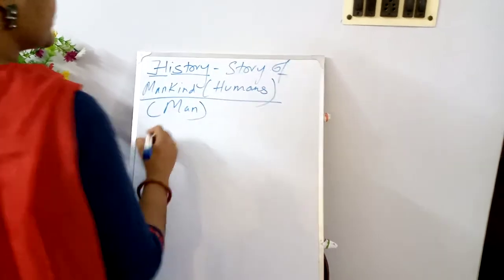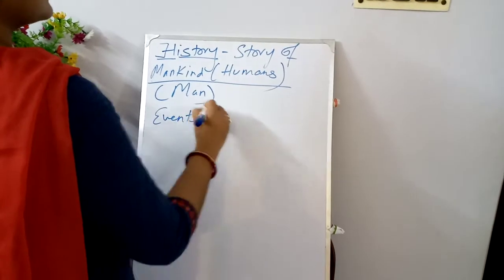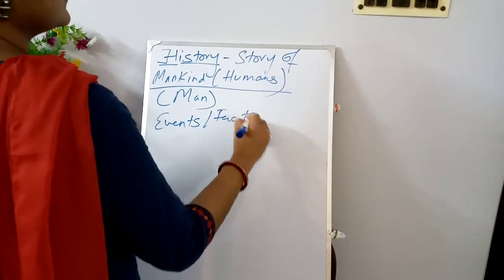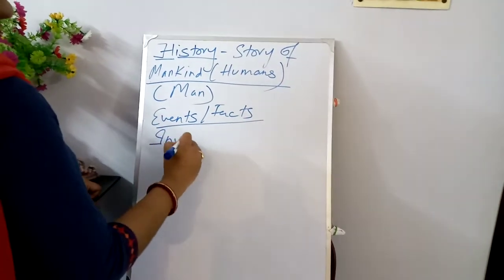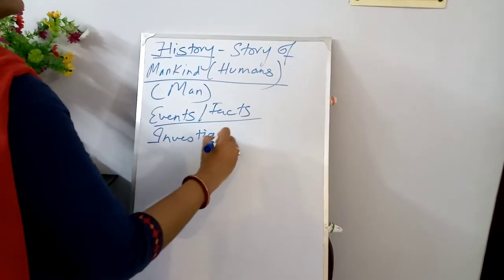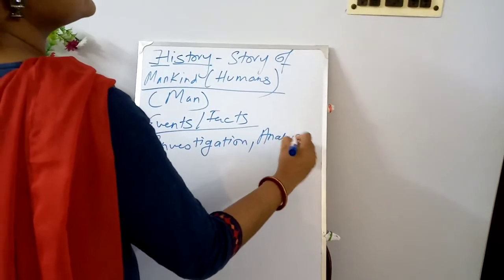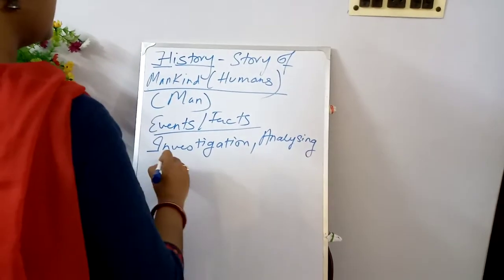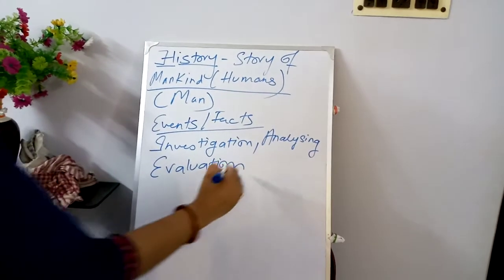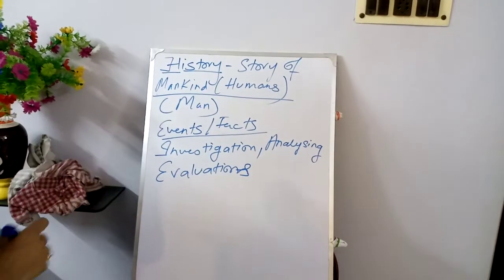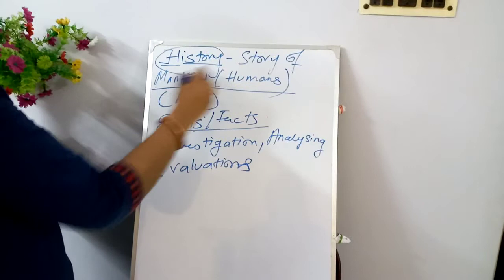History can be accepted as history when the events and facts are proved by investigating the facts, analyzing the facts, and the last portion is evaluation. After these three processes, an event or a fact could be accepted as history.